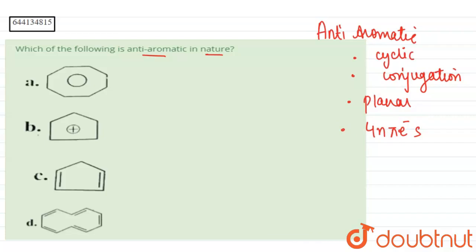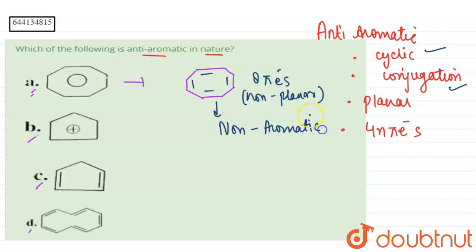Now we will see which of the following conditions are satisfied in all. All the conditions are satisfied in which of the compound, that will be our answer. So our first compound is cyclo octa tetra e. Now it is cyclic, it has eight pi electrons, it has conjugation, but it is non-planar. It is non-planar, so that makes it non-aromatic.